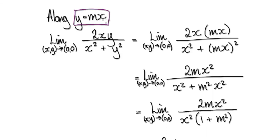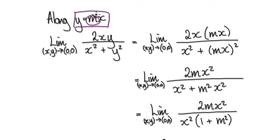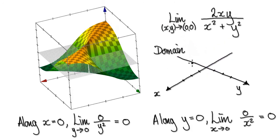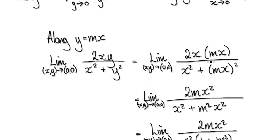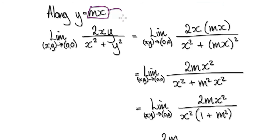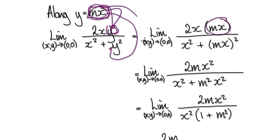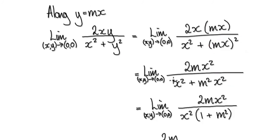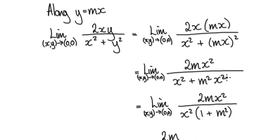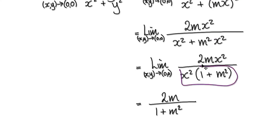To illustrate approaching the origin in a straight-line manner, we use this trick: let y equals mx. Here m represents a gradient. If m is a high value, the gradient is steep; if m is a low value, then the gradient is shallow. So put y equals mx into the expression. Put this thing in and square it — that gives this. x squared is in common, so factor out x squared. That cancels, giving you this result.